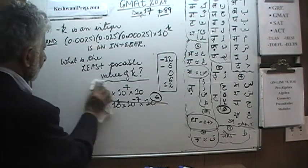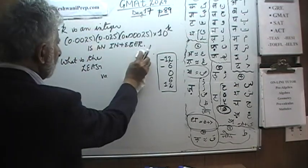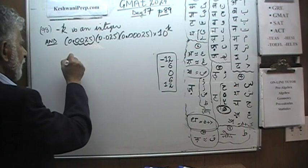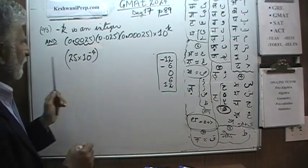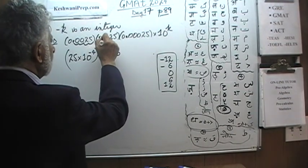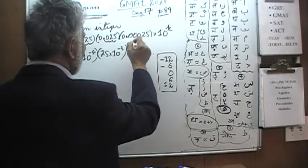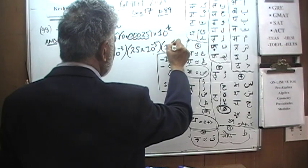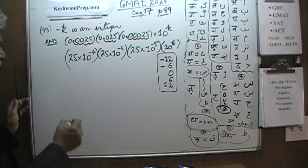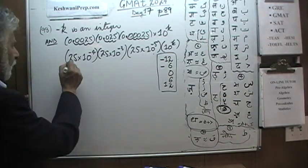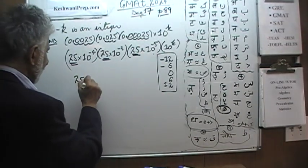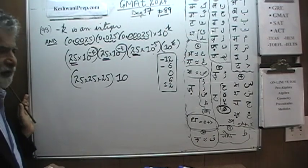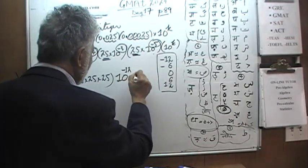Now let's do it together. We have 0.0025 — there are 4 digits after the decimal — so this can be written as 25 times 10 raised to negative 4. Similarly, 0.025 can be written as 25 times 10 raised to negative 3. And 0.00025 can be written as 25 times 10 raised to negative 5 times 10 raised to K. The combined power of 10 from all three decimals is negative 4 plus negative 3 plus negative 5, which equals negative 12. Then we have 10 raised to K.